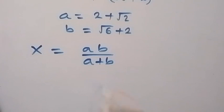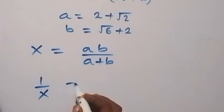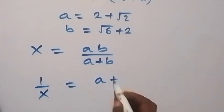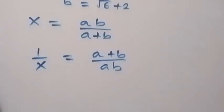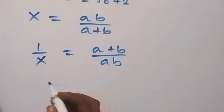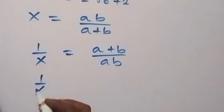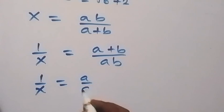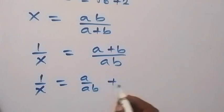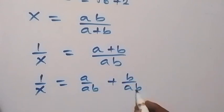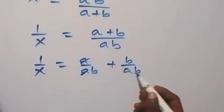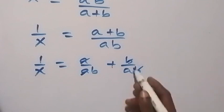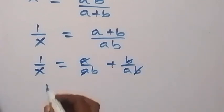Then in the next step, we can take the reciprocal on both sides, giving 1/x equals (a plus b) over ab. The next step: we can separate these fractions, so this becomes 1/x equals a/(ab) plus b/(ab). From here, a cancels a leaving 1/b, and b cancels b leaving 1/a.